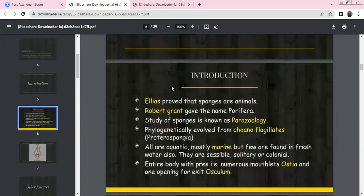Coming to the introduction, Elias proved that sponges are animals. Robert Grant gave the name Porifera. The study of sponges is called Parazoology. Phylogenetically evolved from choanoflagellates (Proterozoans). All are aquatic, mostly marine, but a few are found in freshwater. They are sessile, solitary, or colonial.